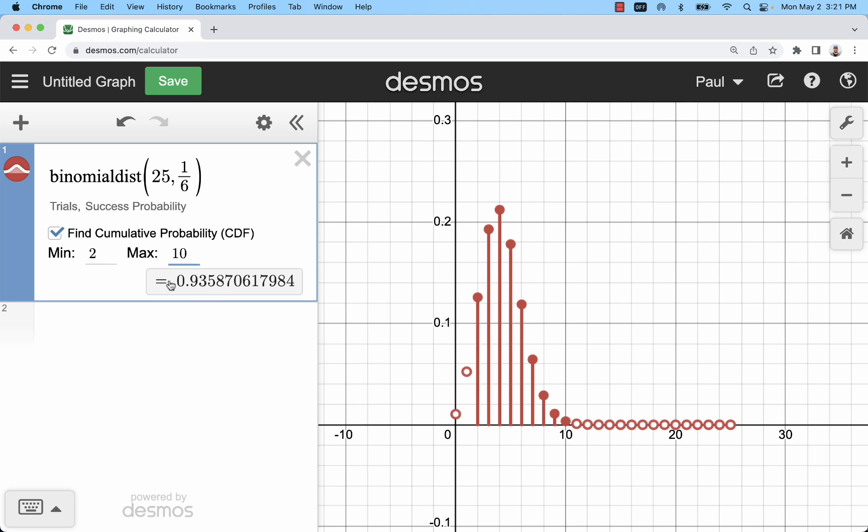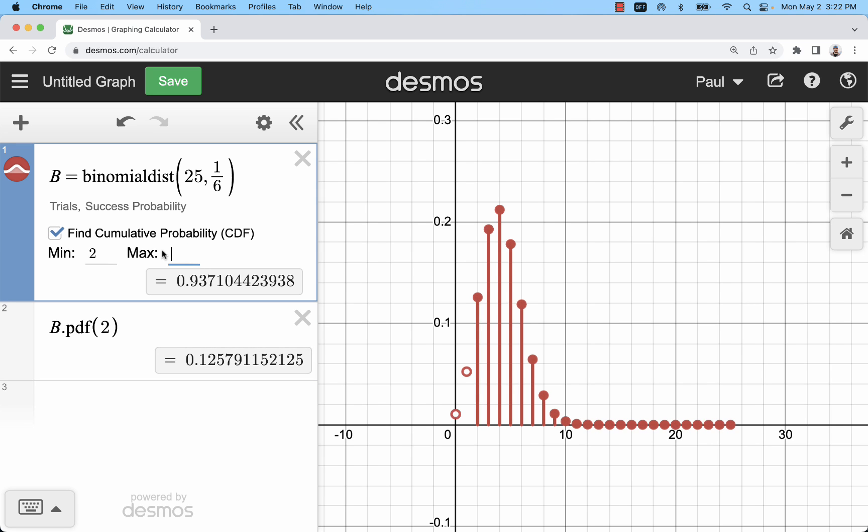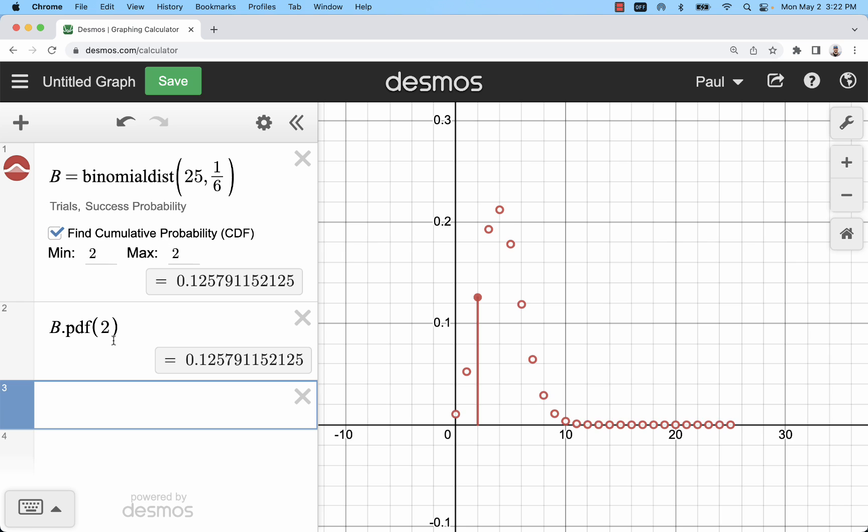The last thing you might want to do is output this value. To do that, what you need to do is define this function. I'm going to call this b with a capital letter. You can use a lowercase letter if you want. Now you can calculate individual probabilities with b.pdf and just one number. So that would be a cumulative probability, for example, from 2 to 2. So that's just an individual probability. Basically, I'm just outputting one of those y values.